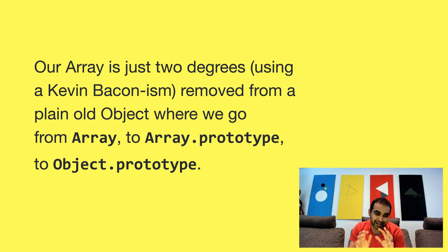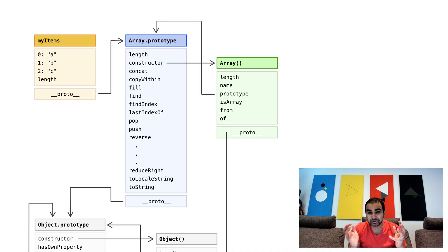So at a high level, we know that an array is just two degrees removed from a plain old object, where we go from array to array.prototype to object.prototype. Now, the full visualization is something that I have linked to at the bottom. It's part of the article. But here's an approximate view of what a typical array called myitems with three items A, B, and C would look like,